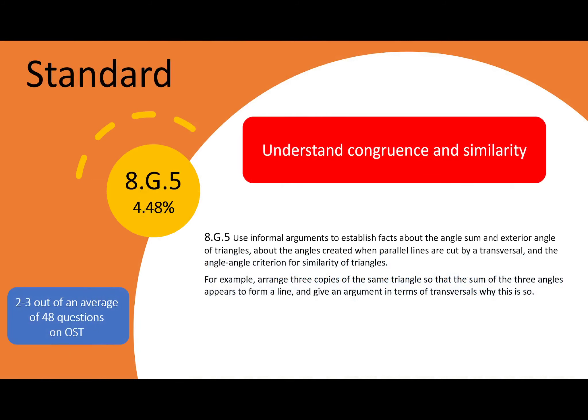Geometry makes up almost one-third of the test questions. Standard 8.G.5: understand congruence and similarity. Use informal arguments to establish facts about the angle sum and exterior angle of triangles, about the angles created when parallel lines are cut by a transversal, and the angle-to-angle criterion for similarity of triangles.